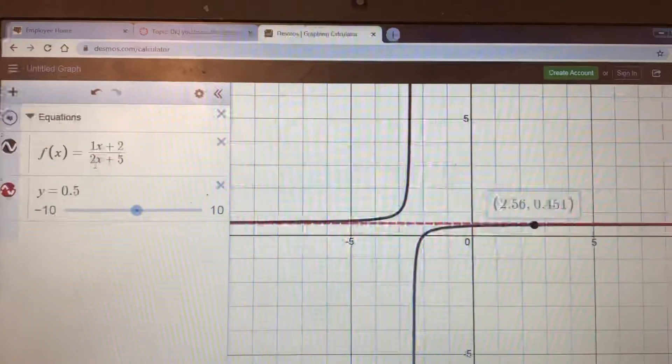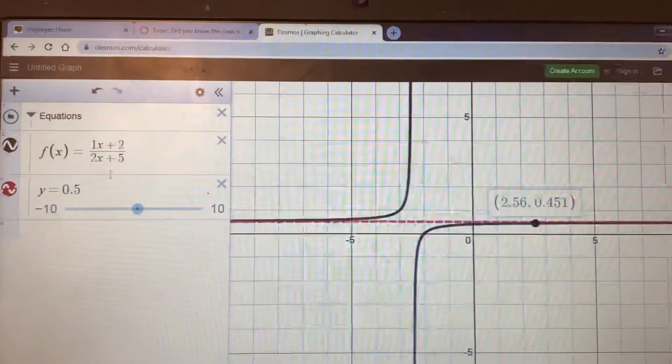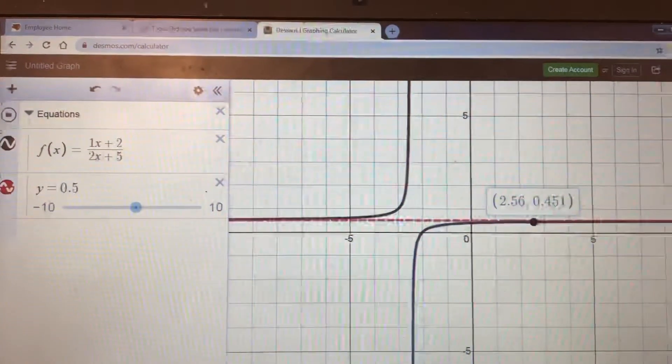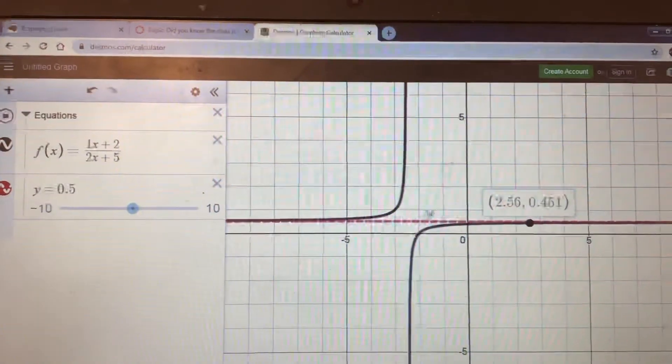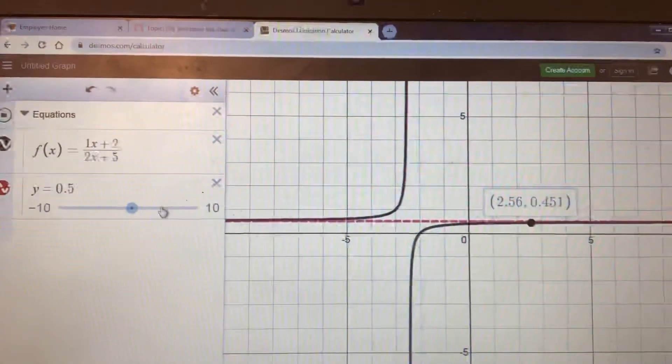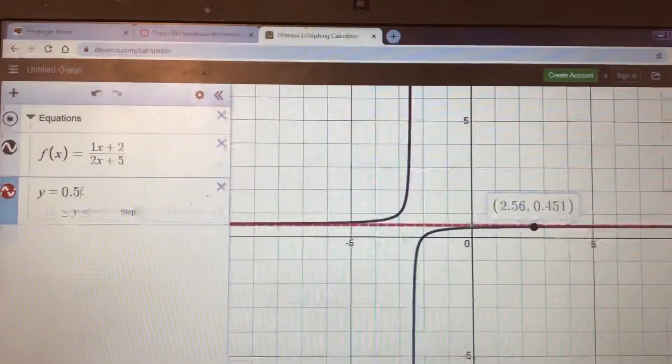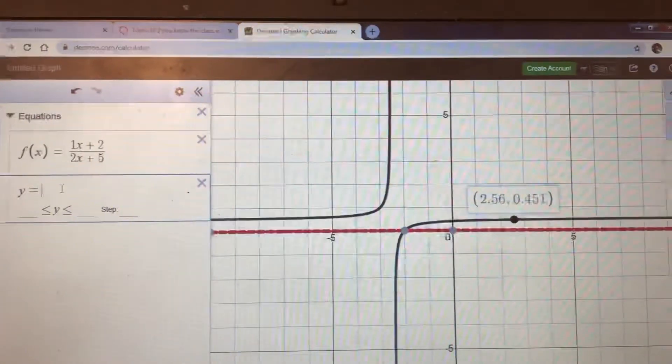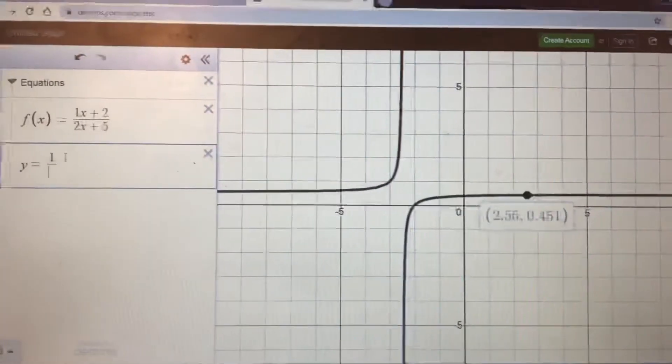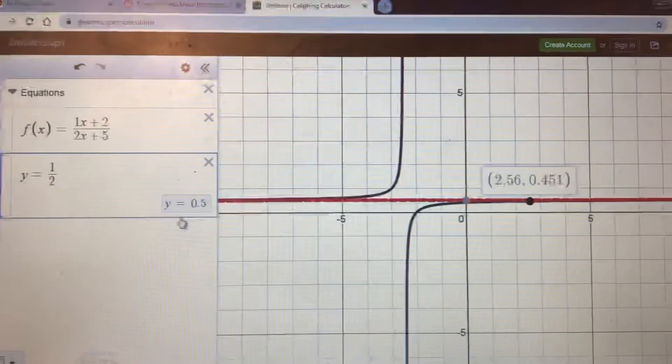Right here. We may be on to something. When it's 1x plus 2 over 2x plus 5, the horizontal asymptote seems to be y equals one half. And I'll tell you right now it is. In fact, I'm going to type this as one half so that it looks the same.